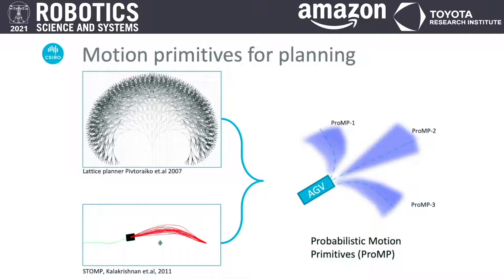To address the challenges faced by these approaches, we propose utilization of a probabilistic representation of the motion primitives for field robots. This was first introduced in the learning from demonstration community as probabilistic movement primitives. Instead of having a discrete motion primitive, we define a probabilistic motion primitive as a distribution of trajectories, encoded by a Gaussian distribution that acts as a motion primitive.